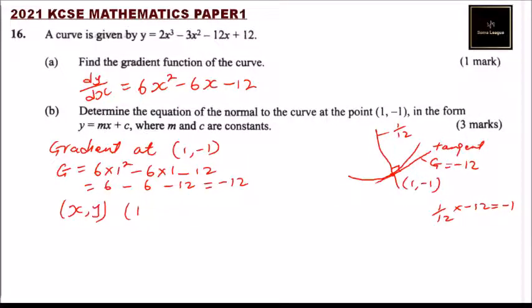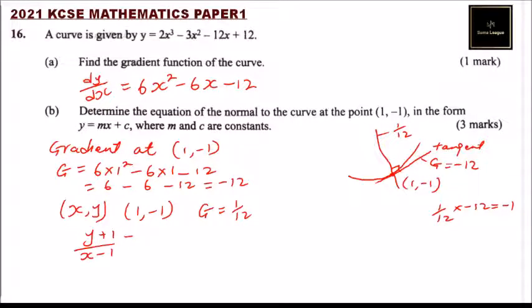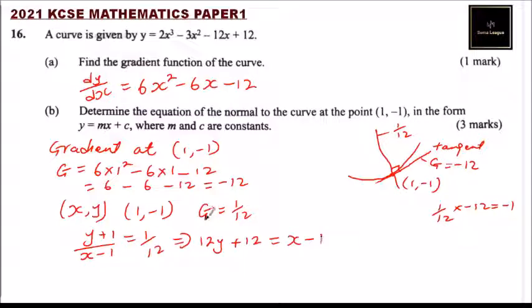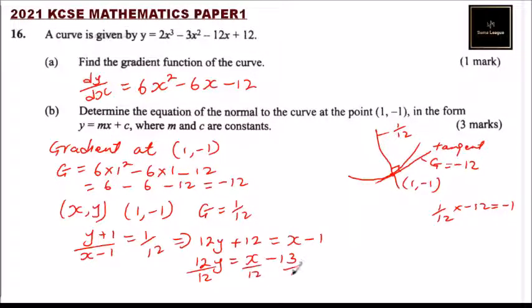With gradient 1/12 and point (1, -1), we form the equation: (y - (-1)) / (x - 1) = 1/12, so y + 1 over x - 1 equals 1/12. Cross-multiplying gives 12(y + 1) = x - 1, which means 12y + 12 = x - 1. Taking 12 to the other side: 12y = x - 1 - 12, giving 12y = x - 13.